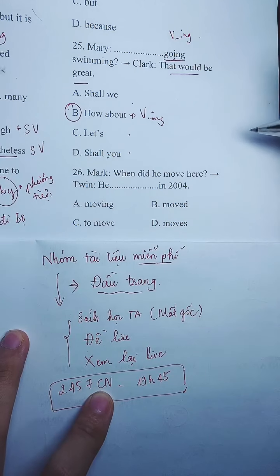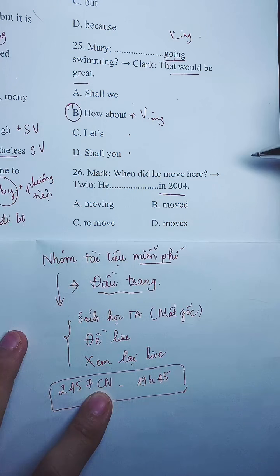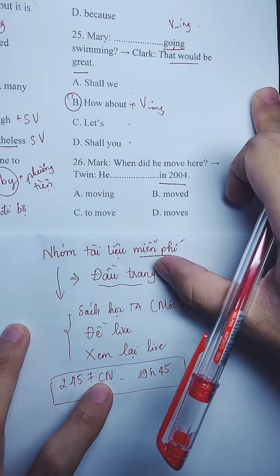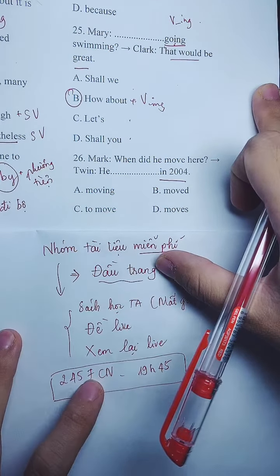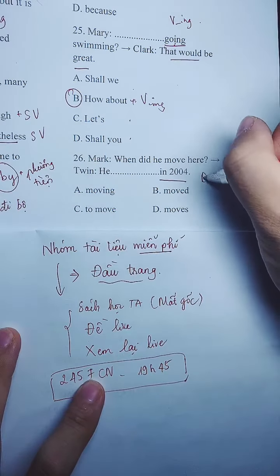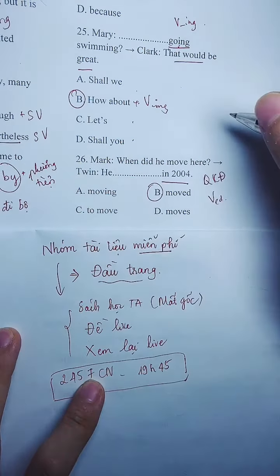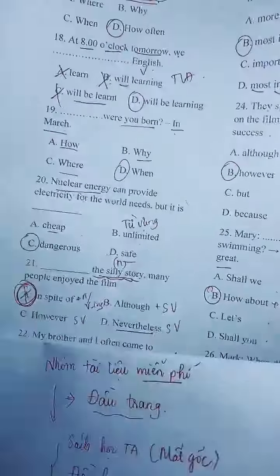Câu 26 — chia thì. 'In' cộng với năm trong quá khứ thì là thì gì? Quá khứ đơn thì chọn đáp án B. 'Anh ta chuyển tới đây khi nào? Anh ta chuyển vào năm 2004.' Đáp án là B.